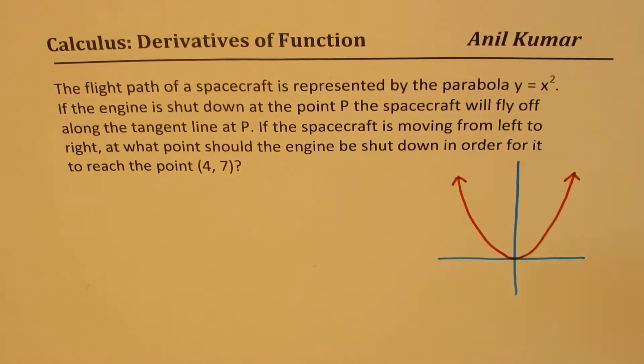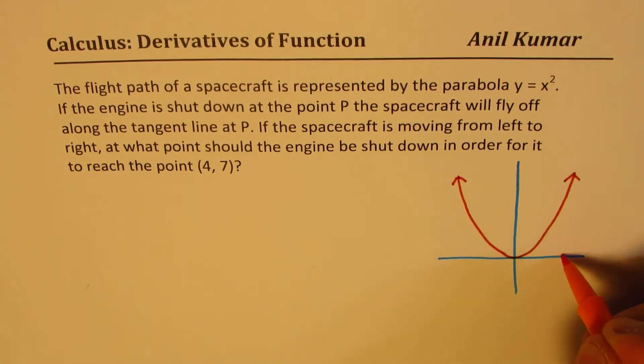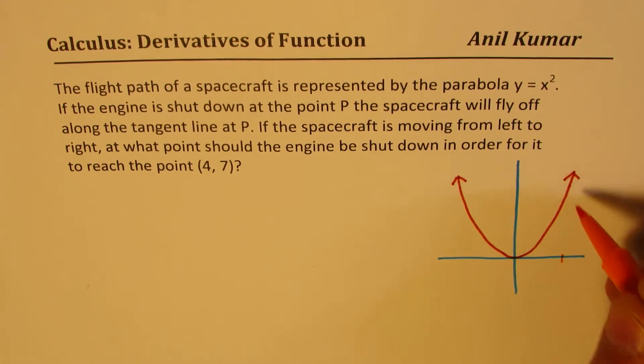Now, the object is moving from left to right, which is the spacecraft. You want to reach a point which is (4, 7). So let us say somewhere here 4. Now, 4 squared is 16, so which is pretty high. So 7 will be somewhere in between.